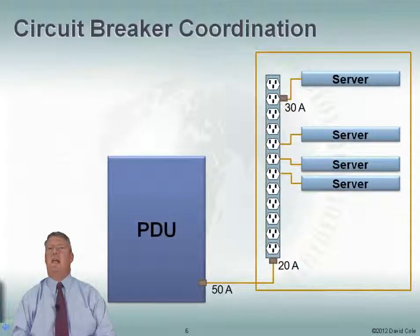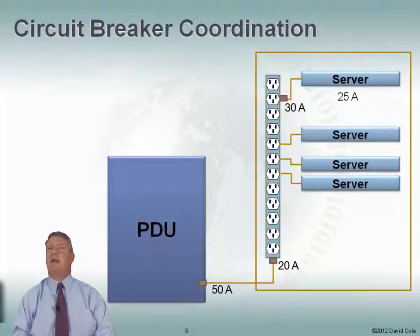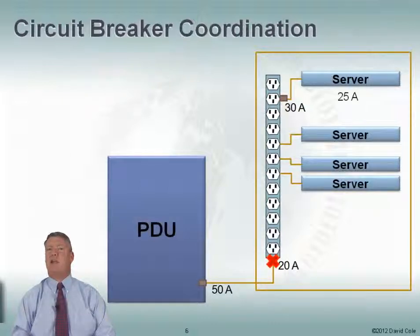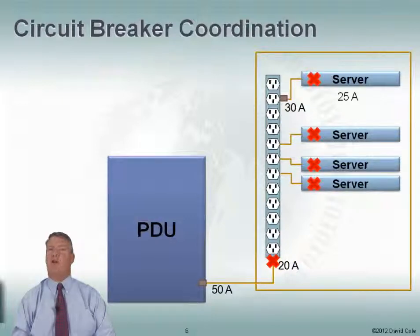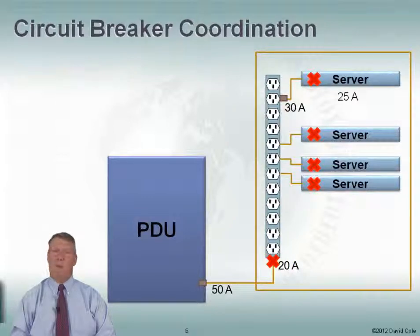Things are going along fine. What happens if my server draws 25 amps? That's fine because it's on a 30-amp breaker, so I'm not going to blow that breaker. But the power continues to go up, and the next breaker the power sees is 20 amps — so that's the breaker that pops. When this 25-amp load is connected, it doesn't pop the circuit on the outlet; it pops the circuit on the entire rack power strip, and I lose all of my servers. This is bad circuit breaker coordination — not what we want.